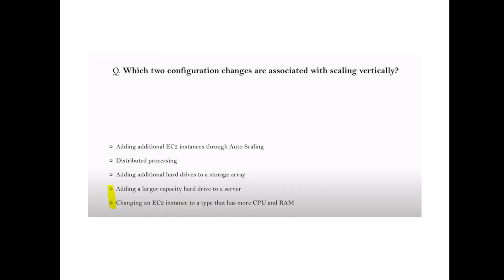Question: Which two configuration changes are associated with scaling vertically? Answer: Adding a larger capacity hard drive to a server and changing an EC2 instance to a type with more CPU and RAM.